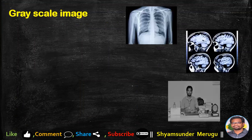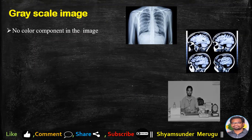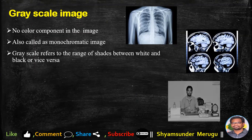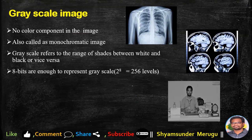Coming to grayscale images, here are examples of how grayscale images look like. There is no color component in the grayscale image. These grayscale images are also called as monochromatic images. Grayscale refers to the range of shades between white and black. 8 bits are enough to represent a grayscale. In an 8-bit grayscale image, there will be 256 levels of shades available between white and black pixels. And if it is a 3-bit image, then 8 levels of grayscale will be available between white and black in the image.